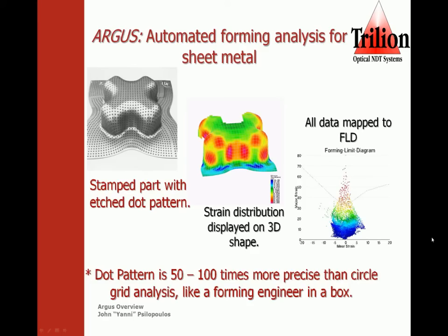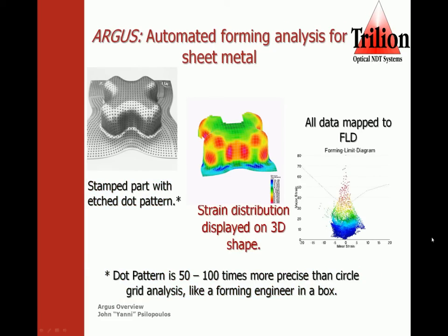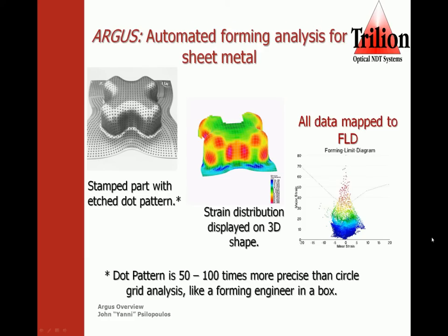The dot pattern itself is 50 to 100 times more precise than circle grid analysis, like having a forming engineer in a box. It then maps the strain distribution on a 3D shape. You can see the hot spots and gradients on the part, and with just a click of a button, it is all mapped to the FLD diagram.